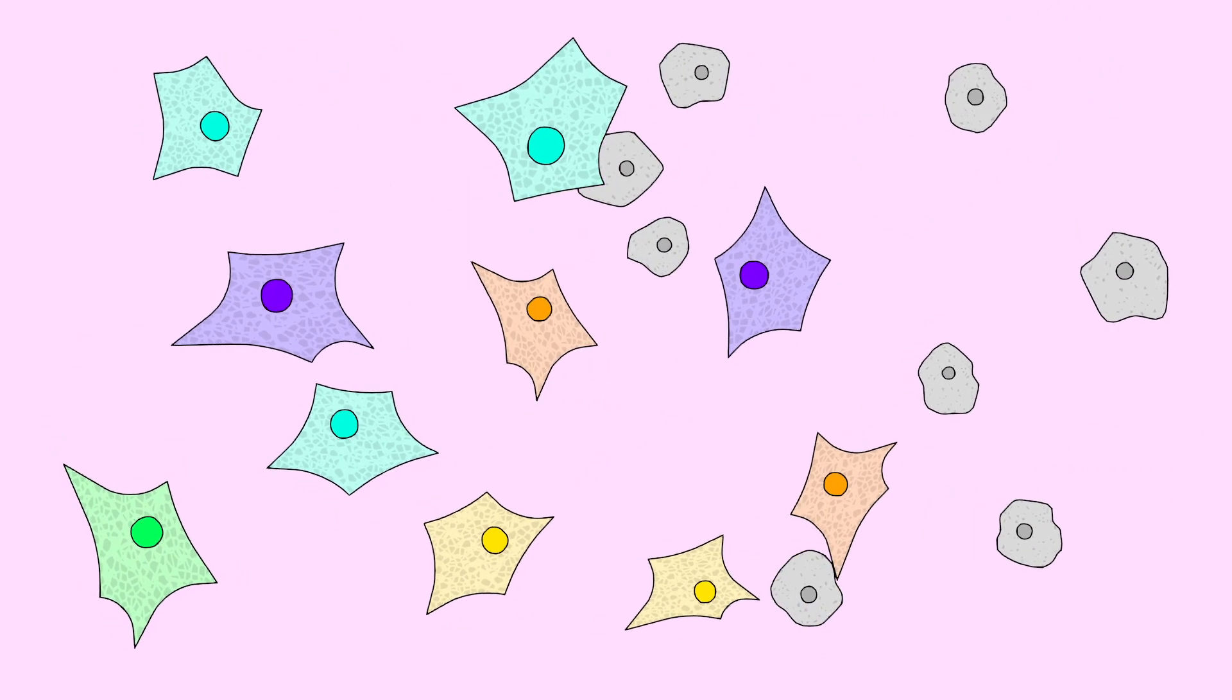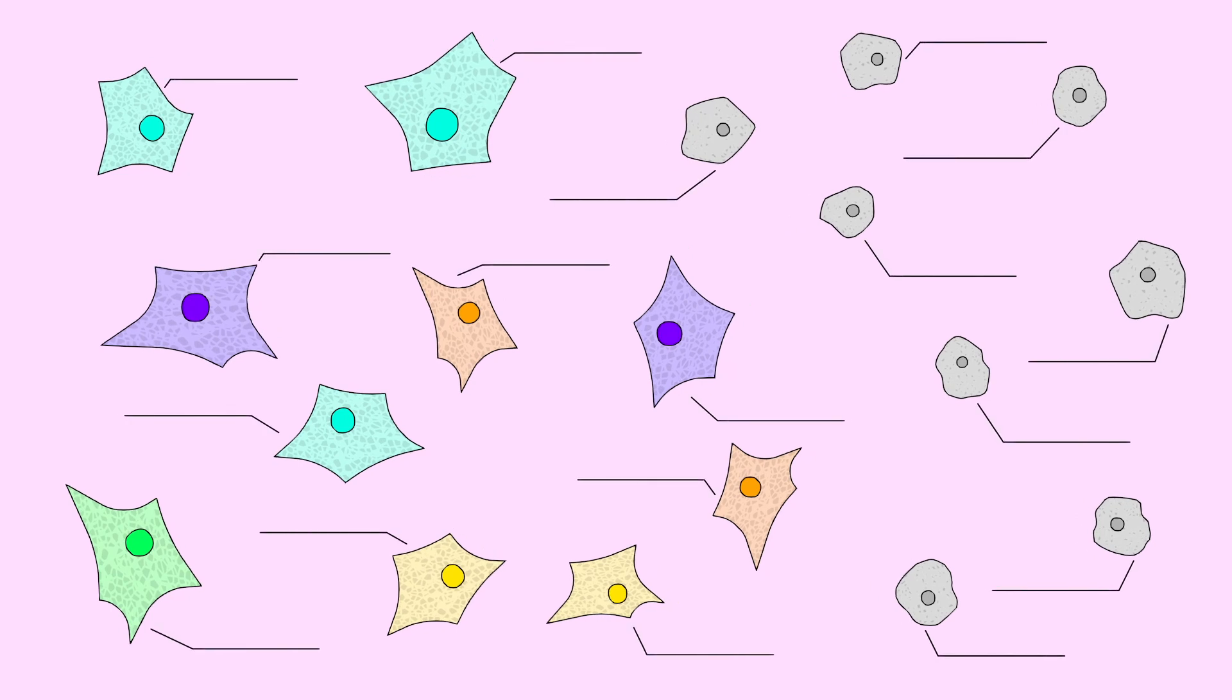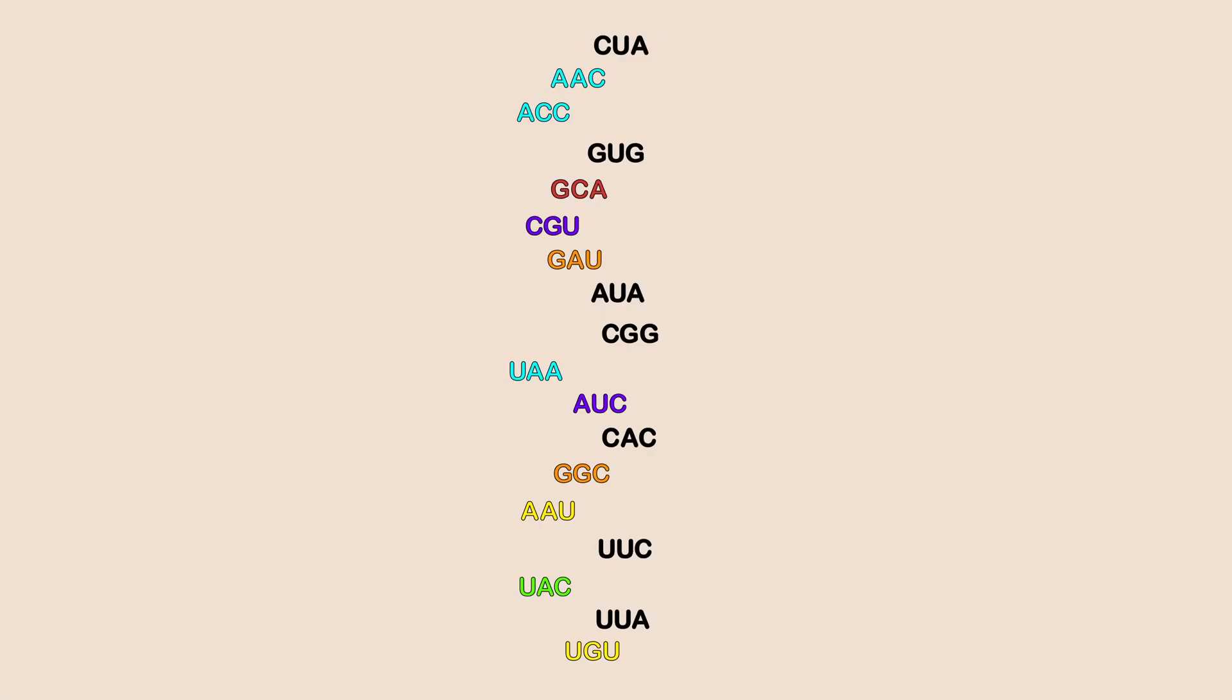Finally, scientists create a kind of map that shows the effect of every mutation that might happen in this gene.